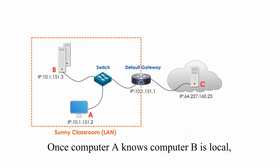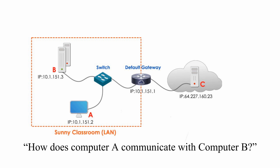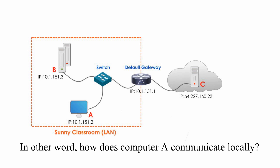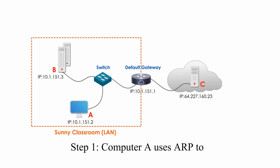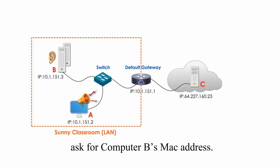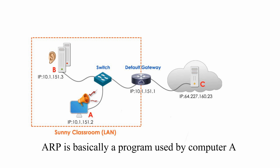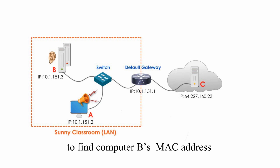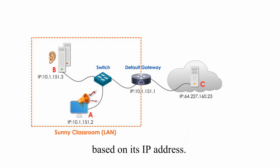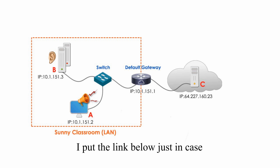Once computer A knows that computer B is local, how does computer A communicate with computer B — in other words, how does computer A communicate locally? Here is the process. Step 1: Computer A uses ARP to ask for computer B's MAC address. ARP is basically a program used by computer A to find computer B's MAC address based on computer B's IP address. I have a video about ARP with the link below.